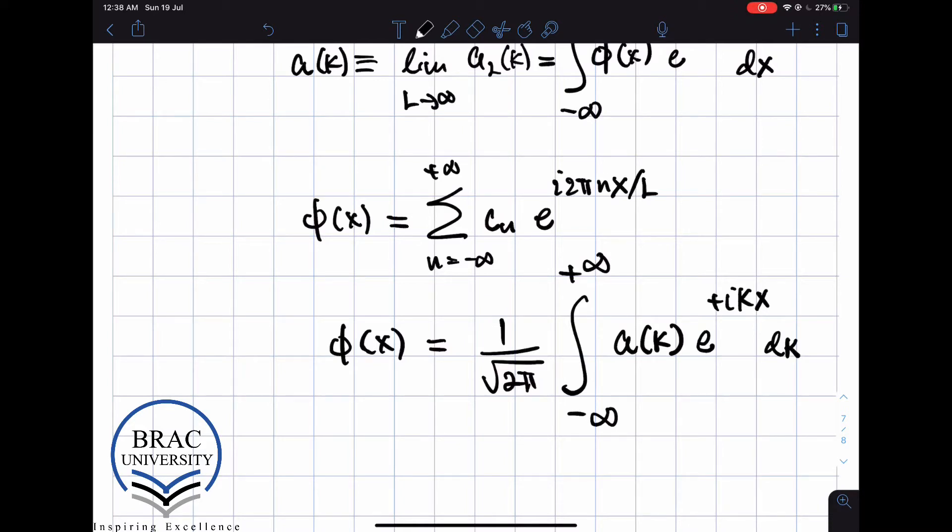So in going from here to here, there are a few steps where you actually introduce delta n, and then turn that into a delta k, so that when you take the limit, you get a measure of dk over here. You should try to do that.